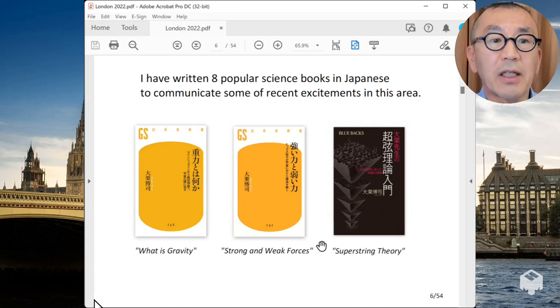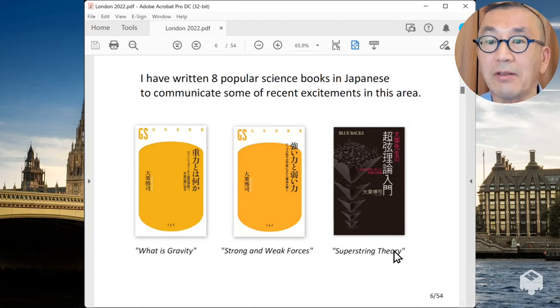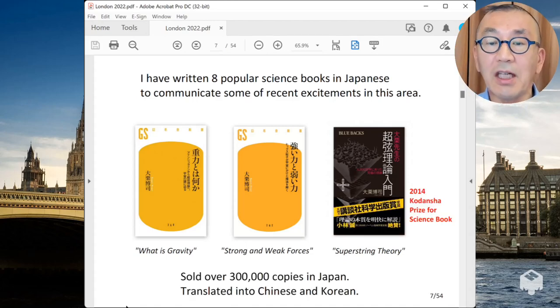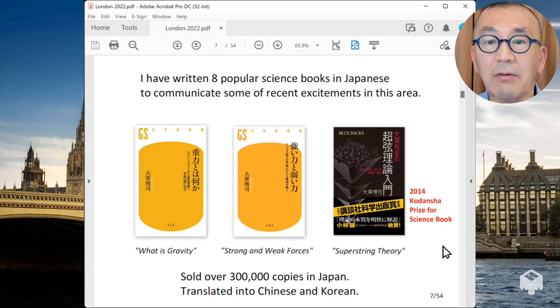I myself have written eight popular science books in Japanese to communicate some of the recent excitement in this area. In this book, I explained some of our understanding of gravity, and this is about the theory of elementary particles, and this is about superstring theory that goes beyond the standard model particle physics. In fact, this has been well received, sold over 300,000 copies in Japan, and translated into Chinese and Korean, and one of the books received the Science Book Prize in Japan.